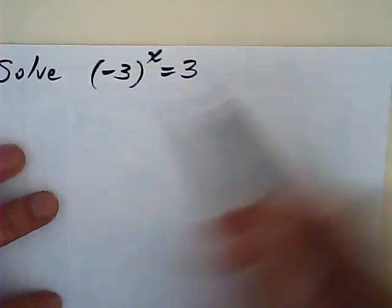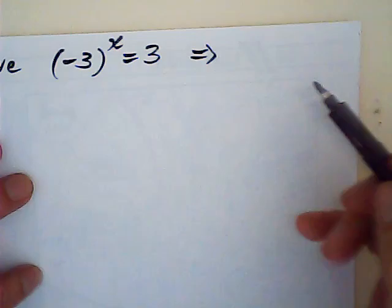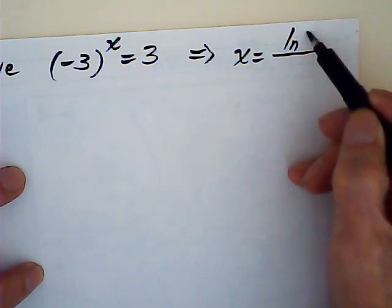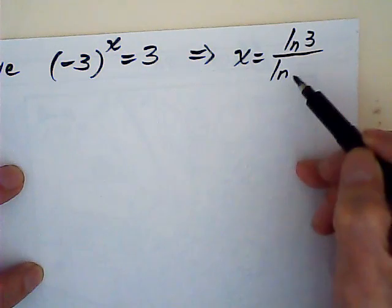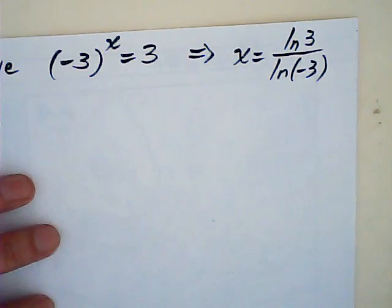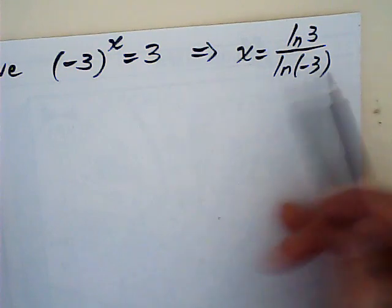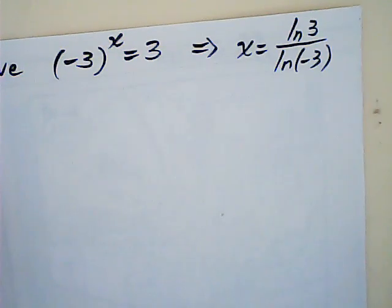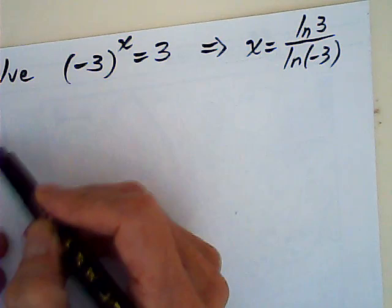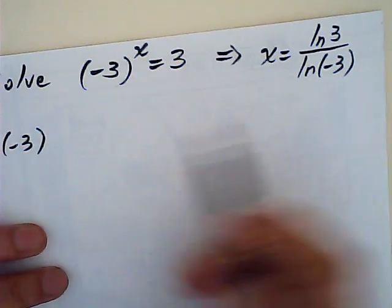Let me do it this way. If this is the equation, then you take both sides log and then you can find x is equal to log 3 over log negative 3, right? So, in order to find x, we just find log negative 3. So, the question becomes, what is a natural log minus 3? So, we change the question.